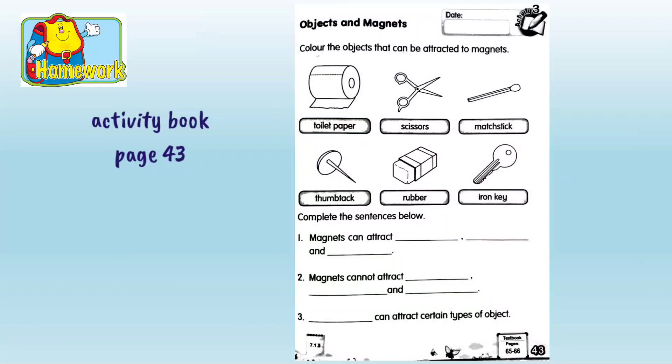All work is from activity book page 43. Firstly, color the objects that can be attracted to magnets. Then, complete the sentences below.